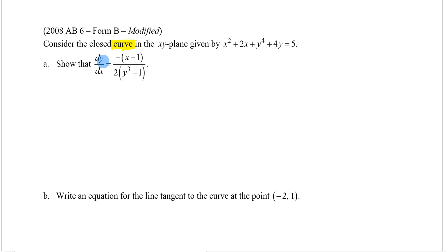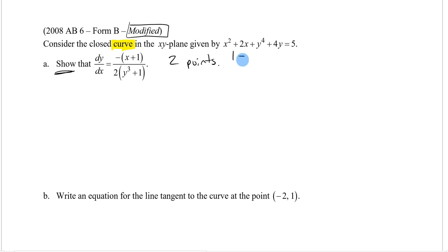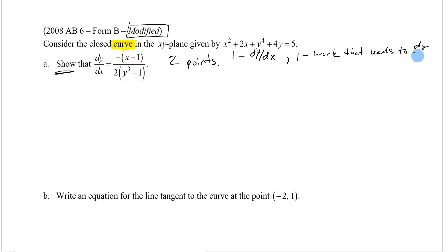Part A says: show that the derivative equals the given expression. This is an actual AP item. In these problems they give you the derivative and you must show it — typically worth two points. The first point comes from taking the derivative properly, and the second point comes from the algebraic work leading to the final answer.